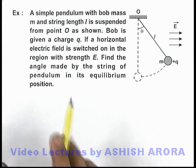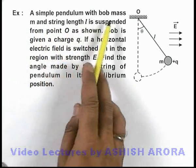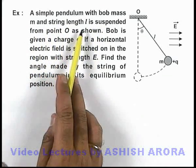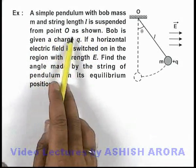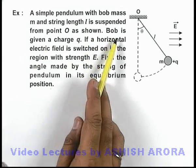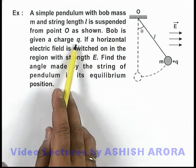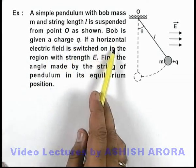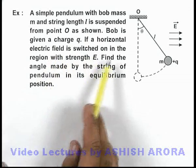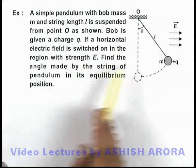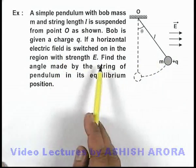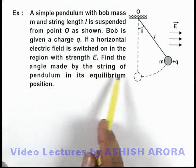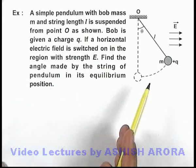In this example, we are given a simple pendulum with bob mass m and string length l suspended from point O as shown. The bob is given a charge +q. A horizontal electric field is switched on in the region with strength E, as we can see here. We are required to find the angle made by the string of the pendulum in its equilibrium position.